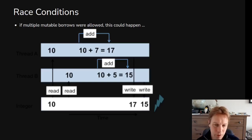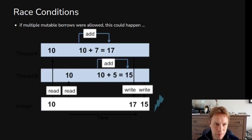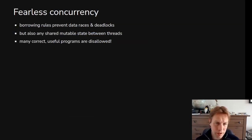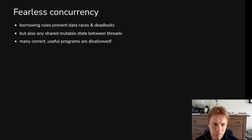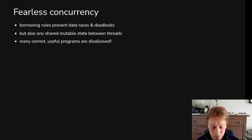That's what Rust's borrowing rules prevent. You can't do this in Rust because these two threads are not allowed to both have a mutable borrow of that original value. It's called a race condition. The borrowing rules prevent those kinds of data races and also deadlocks. But they also prevent any kind of interaction between threads where they're both changing a value — so there are lots of useful programs that you can't do using those rules, but there are ways around them.